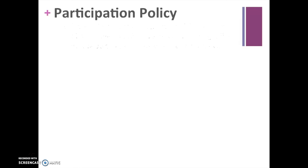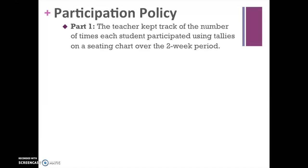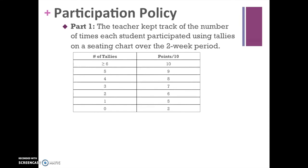Let's look at the participation policy I implemented. There were three parts to the overall grade. First, I kept track of the number of times each student participated using tallies on their seating charts over the two-week study period. I then awarded points based on the number of tallies: six or more tallies earned 10 points, five tallies earned 9 points, four tallies earned 8 points, all the way down to zero. Students with zero tallies — who did not orally participate at all — still earned 2 points per week unless they did something outrageous, like sleeping through class.